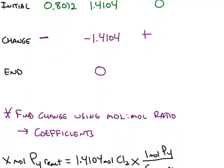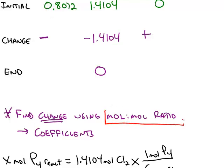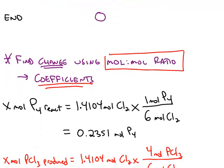To find the number that fits this change row, the key is you have to use the mole to mole ratio from the balanced chemical equation, which means we're going to be using those coefficients to turn one chemical into another. So for example, if I want to know how much phosphorus reacts, that's my unknown, I set that equal to 1.4104 moles of chlorine, and the balanced chemical equation is a 6 to 1 ratio.